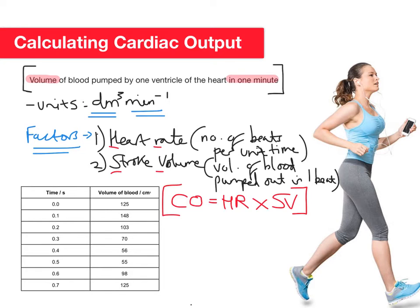Let's look at the table of data in the context of exam questions. We've got time in seconds from 0 to 0.7 down the side, and volume of blood in cm³. I'll note above the table that this is for the right ventricle — it's always important in an exam question to check which part of the heart the data refers to, left side or right side. We're going to extract heart rate, stroke volume, and cardiac output from this table.